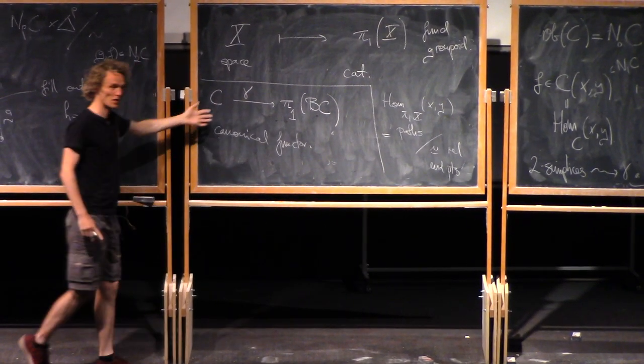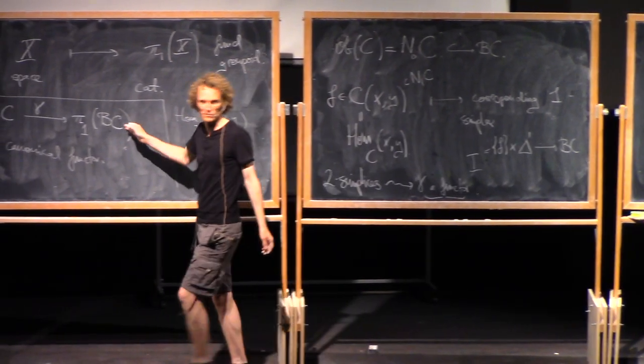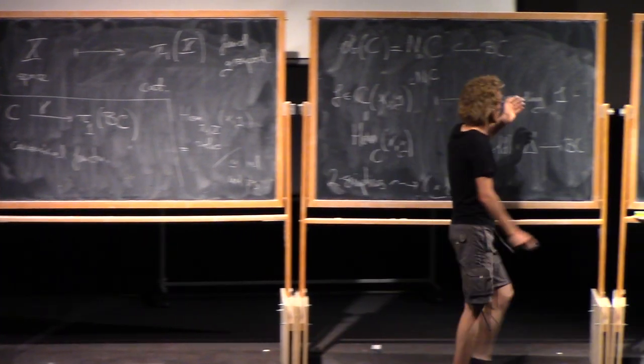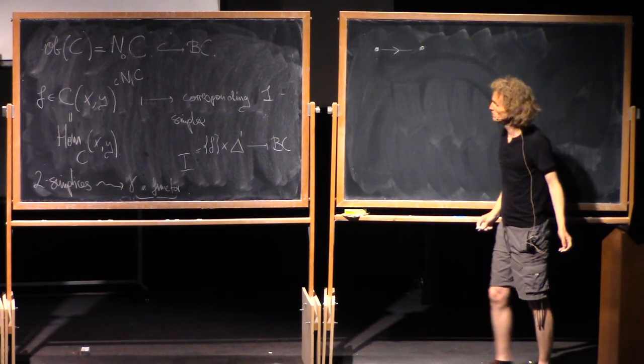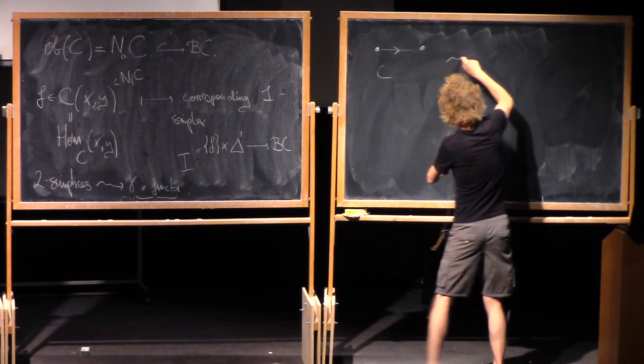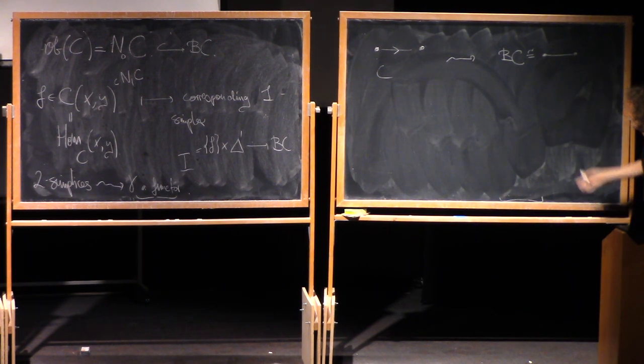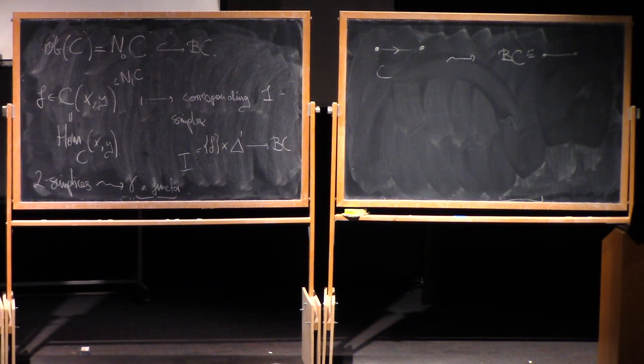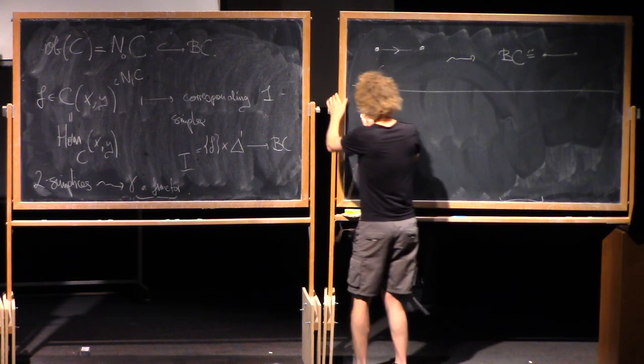Now it's likely not an equivalence of categories. For example, this thing is always a groupoid. So if this thing is not a groupoid, then it can't be an equivalence. For example, if you have the most trivial example of a non-groupoid category - two objects and one morphism between them, one non-identity morphism. Then BC is homeomorphic to just an interval. So the fundamental groupoid is going to be trivial, whereas this is not a trivial category. But that's, in some sense, the only problem.